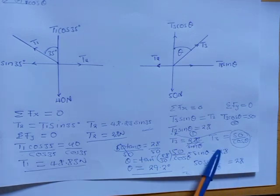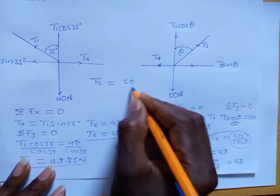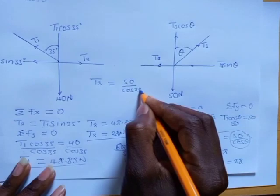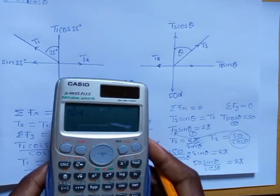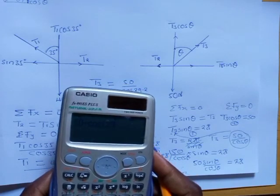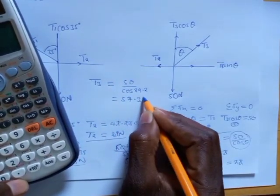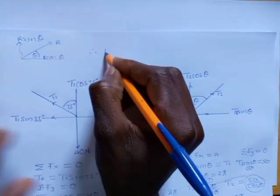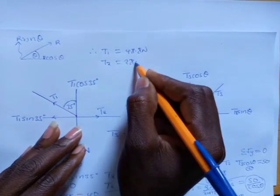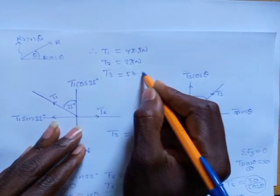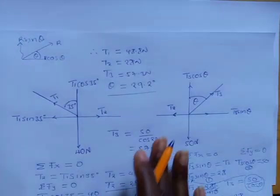We can now find T3. We said T3 equals 50 over cos theta, so T3 equals 50 over cos 29.2 degrees. Punching this directly gives T3 equal to 57.3 newtons. Therefore: T1 equals 48.8 newtons, T2 equals 28 newtons, T3 equals 57.3 newtons, and theta equals 29.2 degrees. That's how you find these three tensions and the angle.